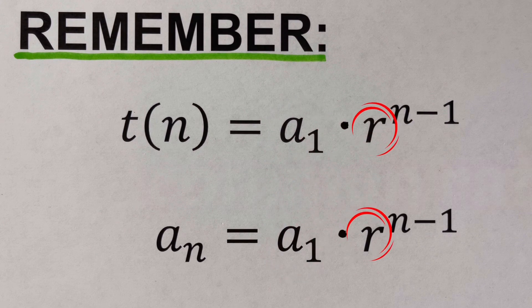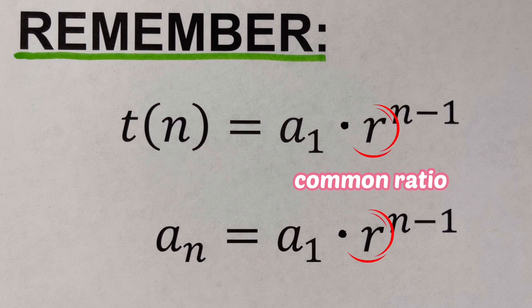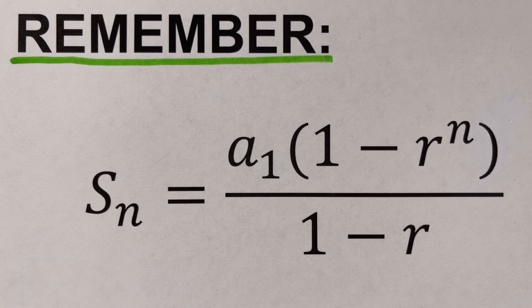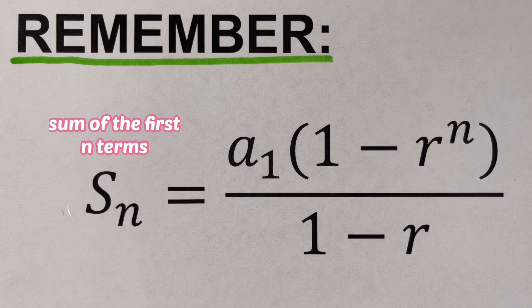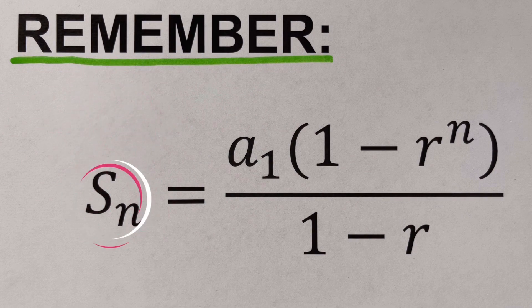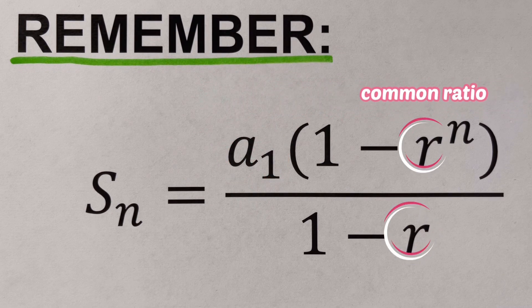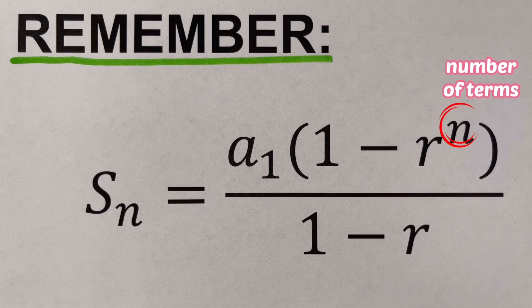And r is the common ratio. The second formula is used to determine the sum of the first n terms of a geometric series. This is represented as S_n = a₁ · (1 − r^n) / (1 − r), where S_n represents the sum of the first n terms, a₁ represents the first term, r represents the common ratio, and n represents the number of terms.